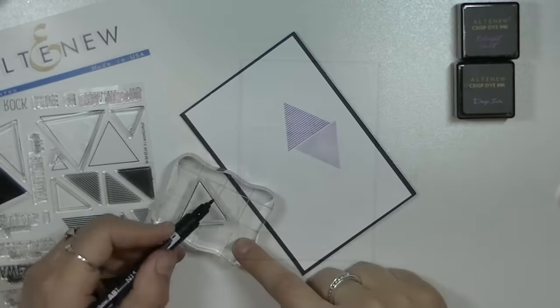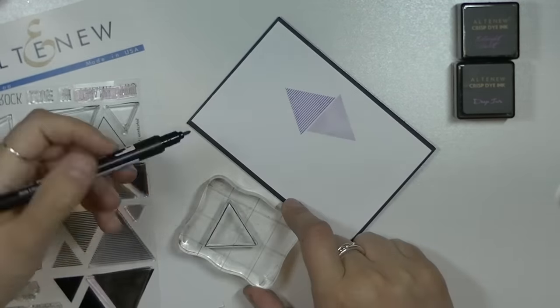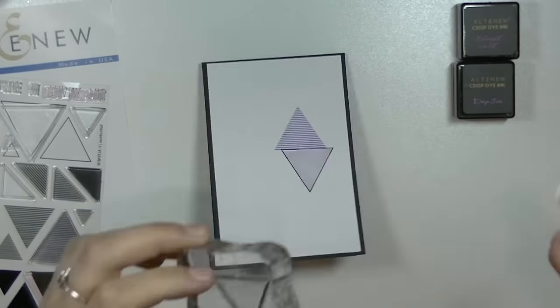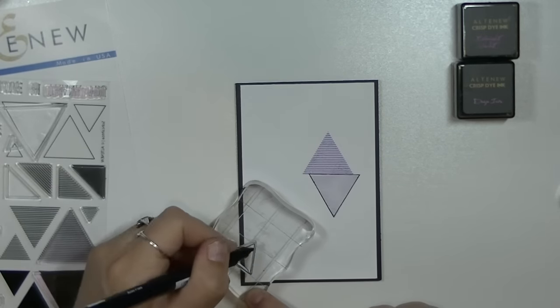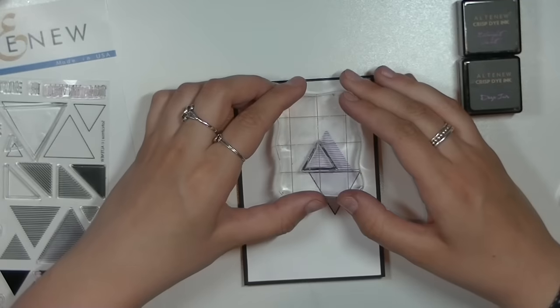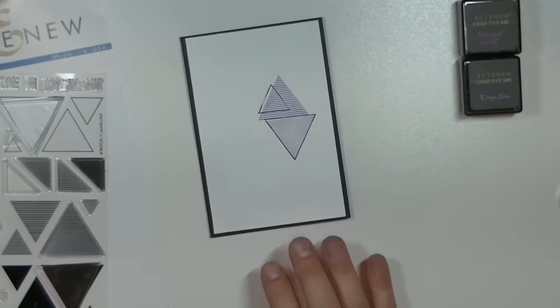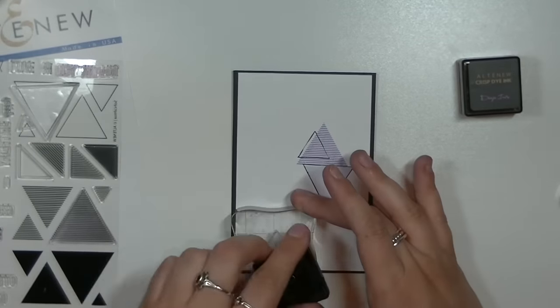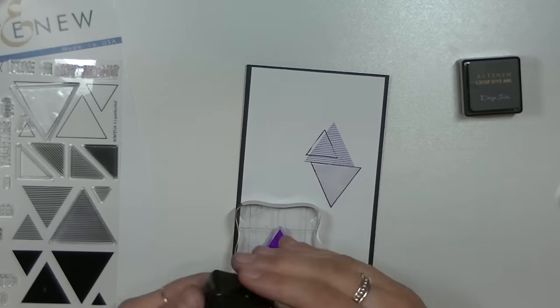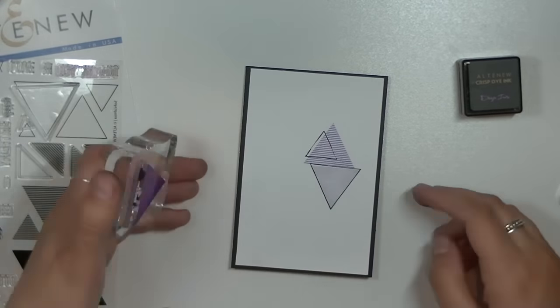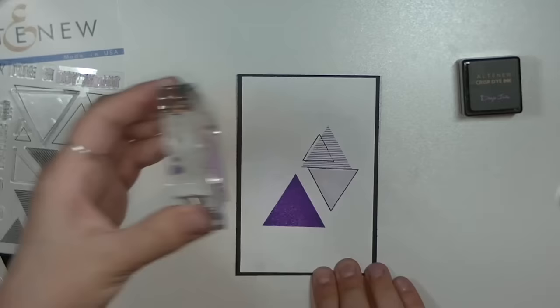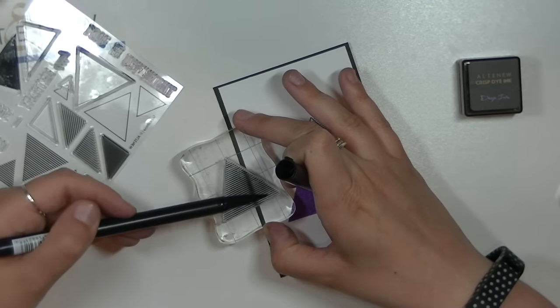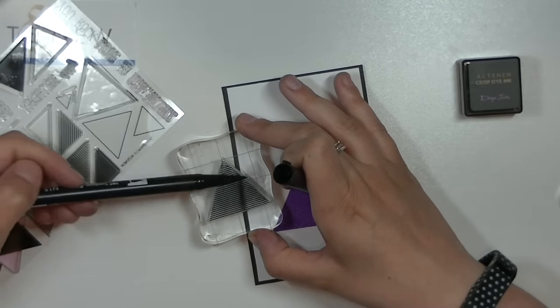I'm just using the black dual brush pen to add those black elements that I want onto my card. So I'm using the striped, then the solid, and then the outline triangles as well. And this is I think my favorite color. It's just so beautiful and vibrant.